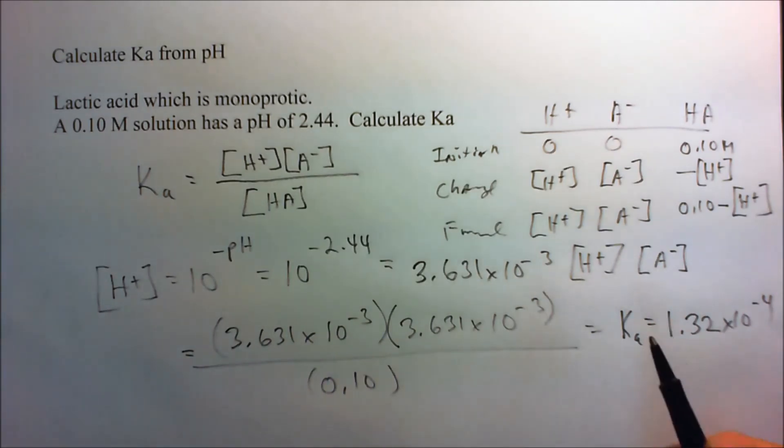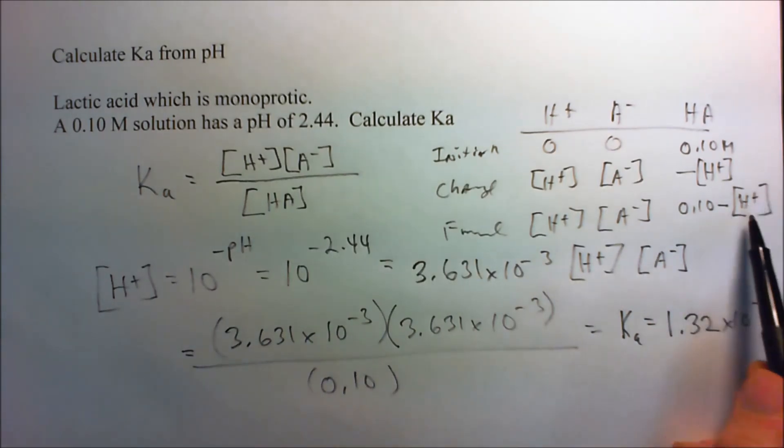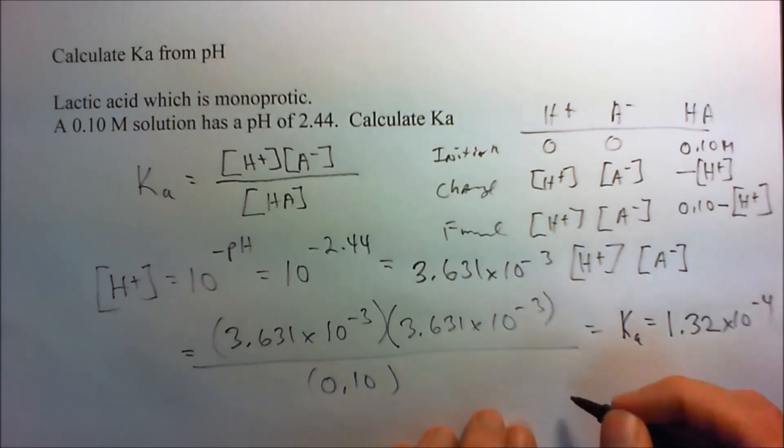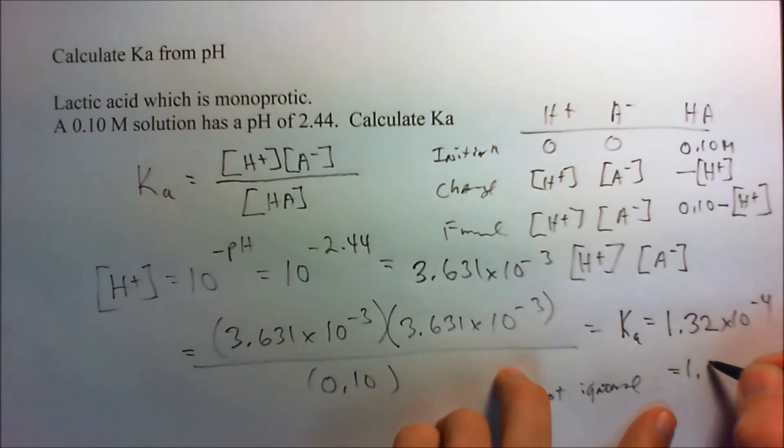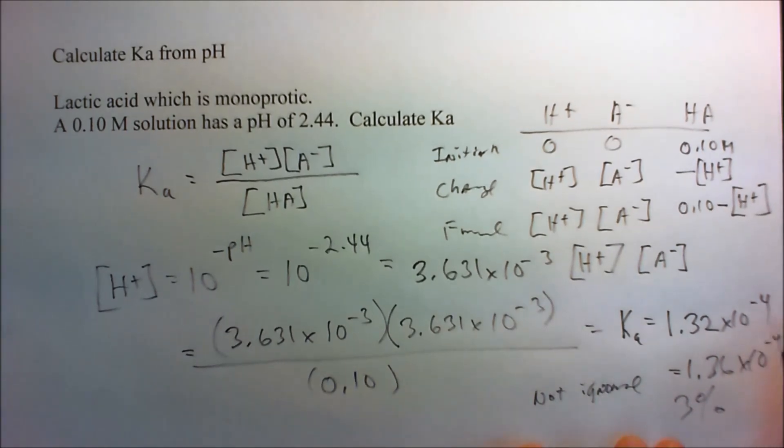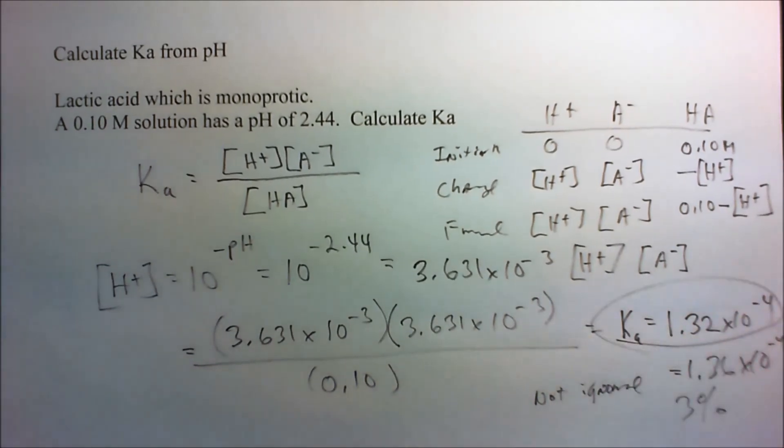Now, if we had not ignored this subtracting off of this term, if we had not ignored and went back and did the calculation again, Ka would be 1.36, which is a percent error of about 3%. So, there you go. Got a Ka from molarity and pH.